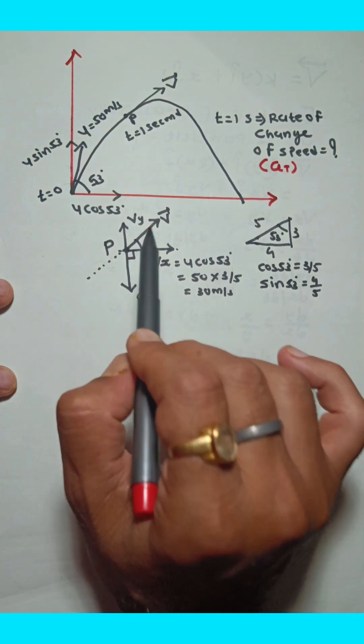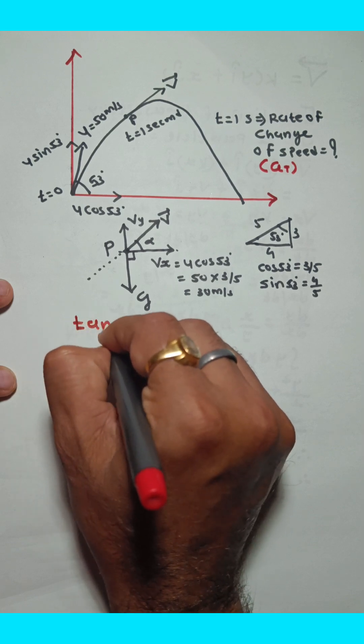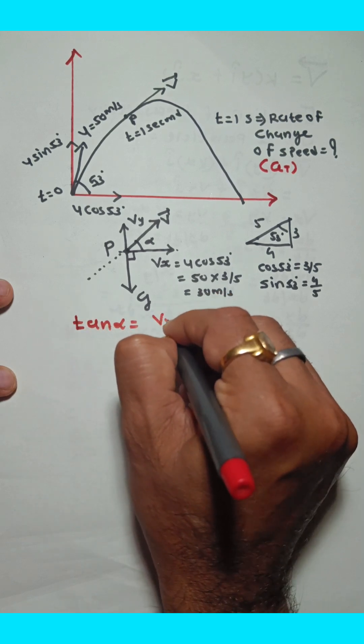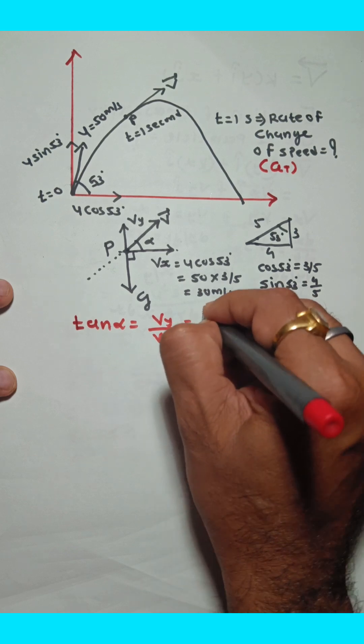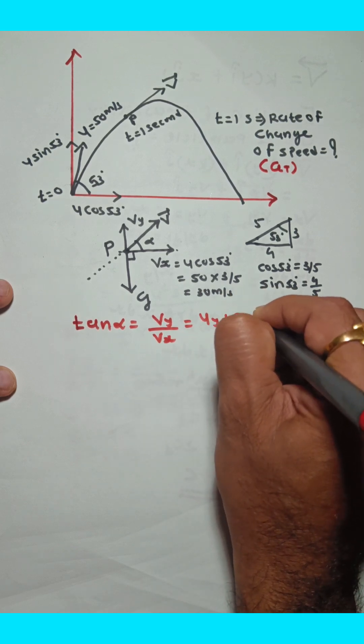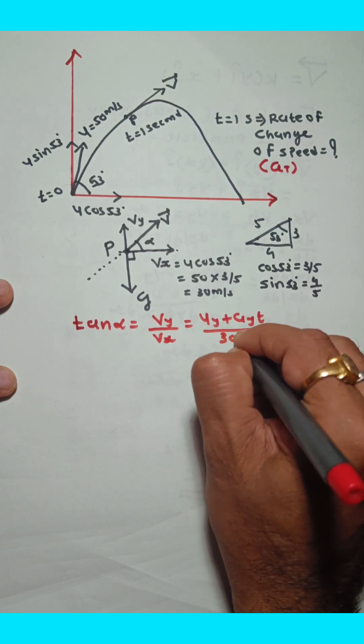Now find alpha. How can you find alpha? Tan alpha equals the y component of velocity divided by the x component of velocity, where vy equals uy plus ay times t, and the x component is 30.